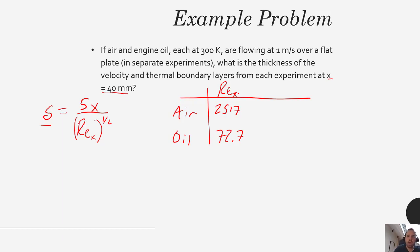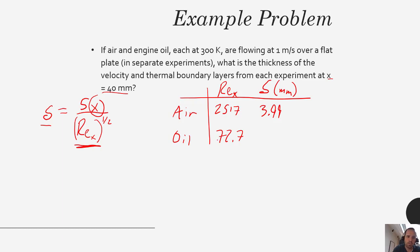After calculating the Reynolds number for each, we simply plug it into the equation along with our x value. So our delta at x equals 40 millimeters for air is 3.99 millimeters. For the oil — as expected from our conceptual question — the boundary layer is much higher because the oil has a lower Reynolds number in the denominator, making the boundary layer thickness larger. We get a velocity boundary layer thickness of 23.5 millimeters for the oil.